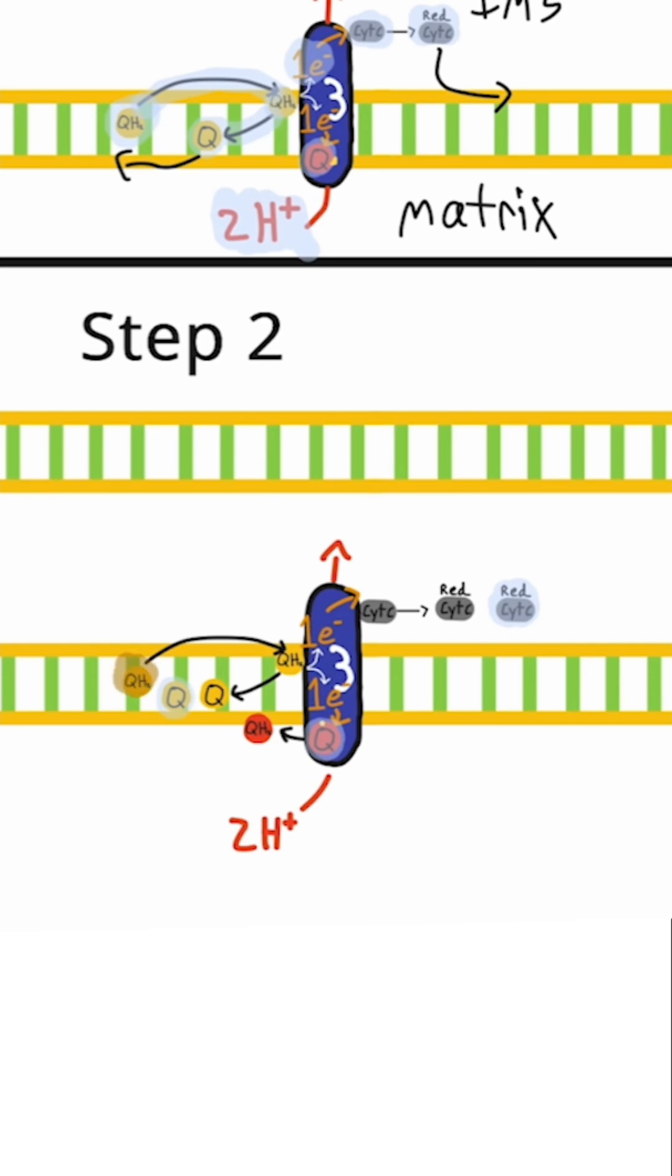Now we have a new ubiquinol arrives, and this one was also created at complex 1 or 2. It moves to complex 3 and donates two electrons, just like what happened in step 1.